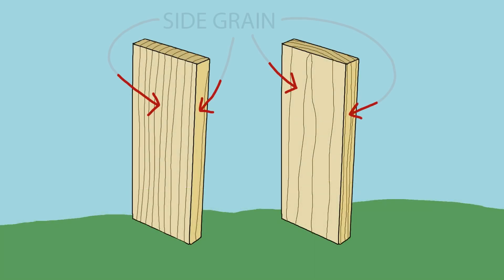The grain on the sides of a board is called side grain. Side grain can be thought of as the sides of the straws. Side grain is far less porous than end grain.